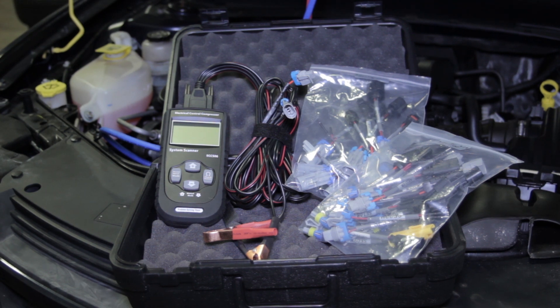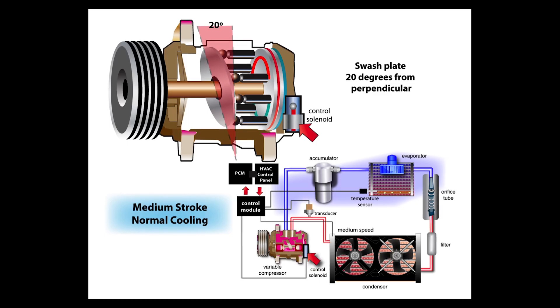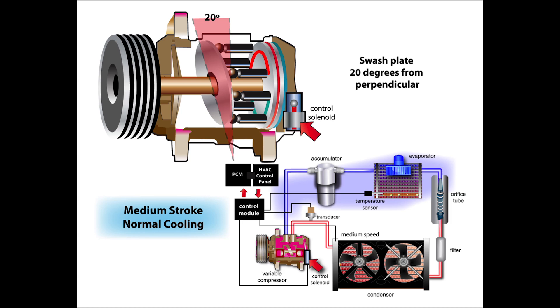Why would we need this tool? Well with electronic variable displacement compressors, there's no clutch turning the compressor on or off. There's a variable displacement control solenoid, which is commanded by the vehicle's control modules.